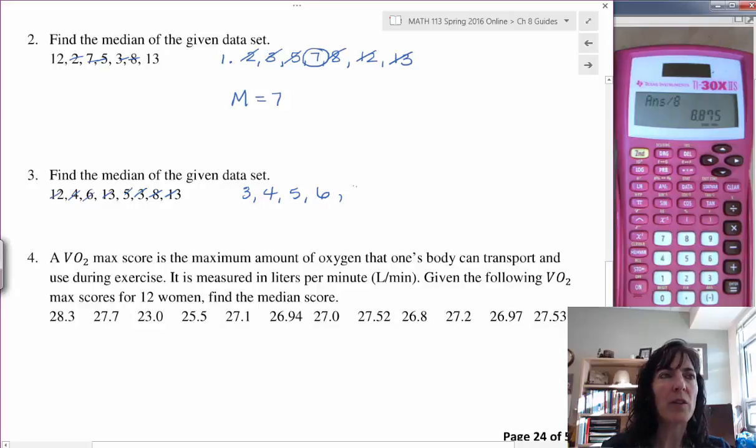Cross all those off: 3, 4, 5, 6, and then 8, 12, 13, 13. That'll be everything: 8, 12, 13, 13. And then I will just cross off from each end until I find the middle.